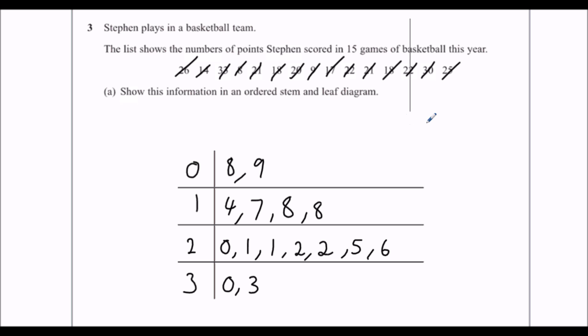The only thing that's missing, stem and leaf diagrams, they have a key. So we'll have a little key here. Zero, eight, that should be an eight, clearer. Zero, eight is eight points. Equals eight points. So there's a key. There's an ordered stem and leaf diagram. So that one's done.